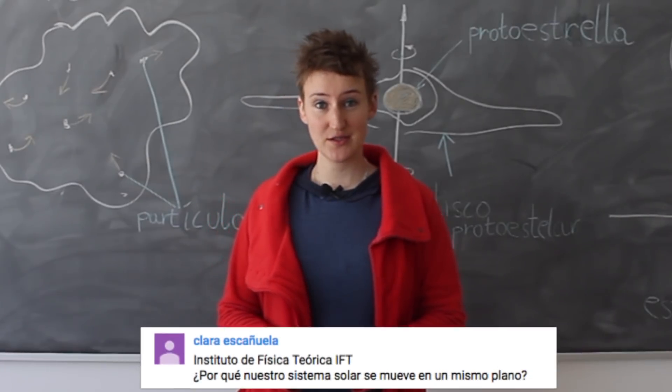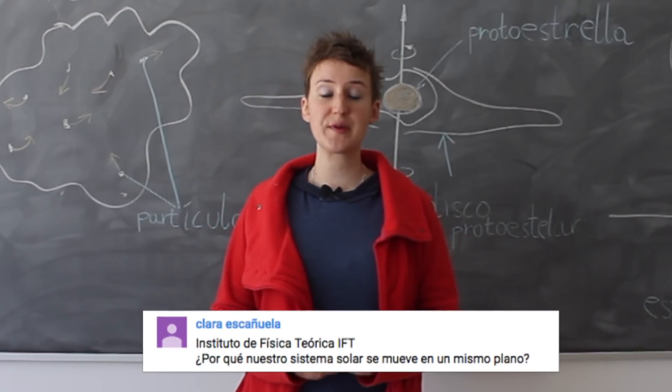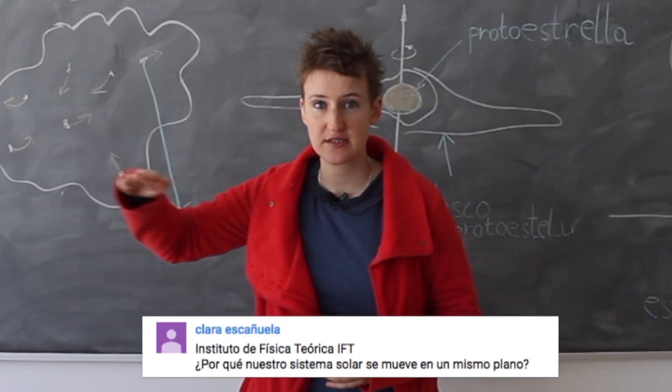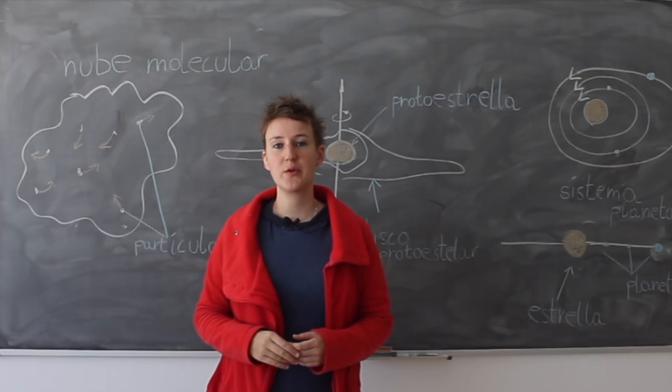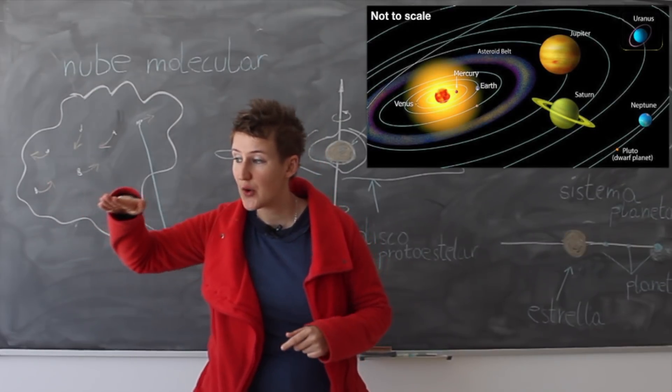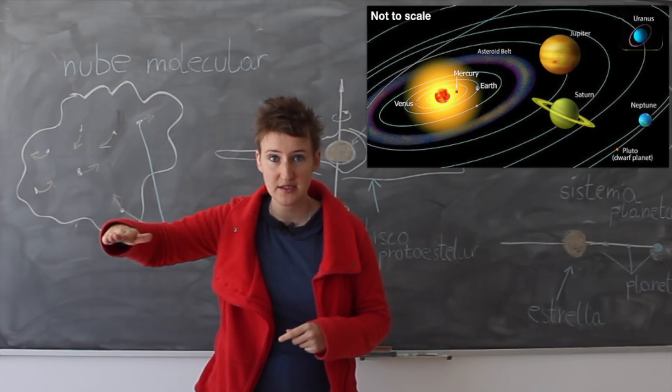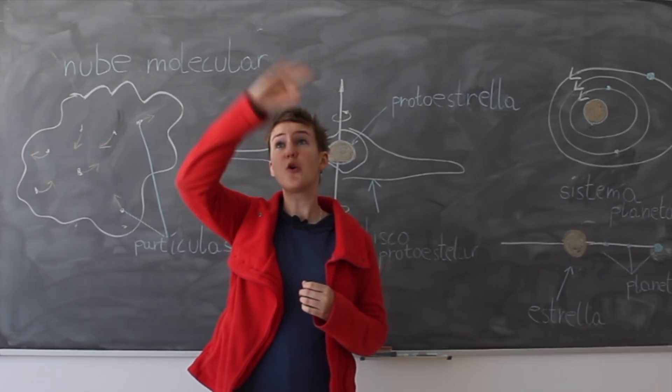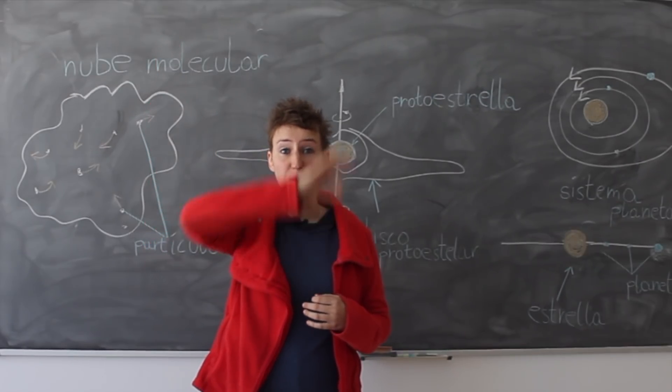Why do planets only orbit the Sun in a certain disk? What we can observe is that all planets are lined up and orbiting around the Sun in a certain disk. We do not see a planet which, for example, orbits the Sun around its poles.